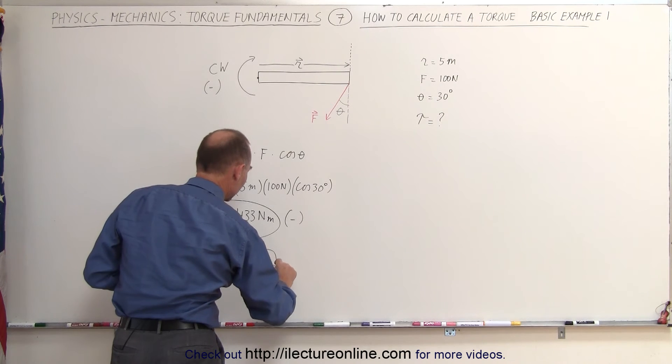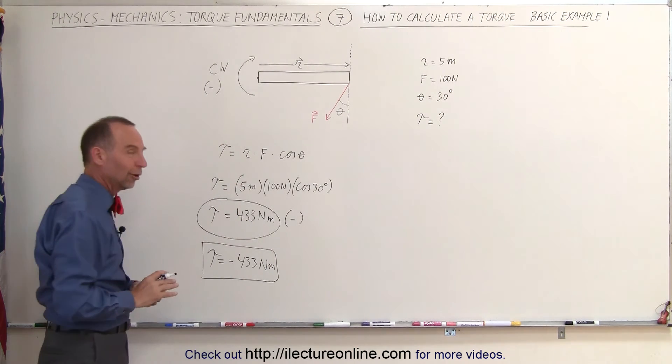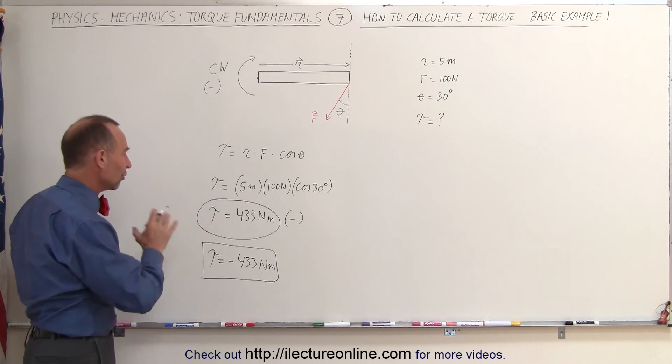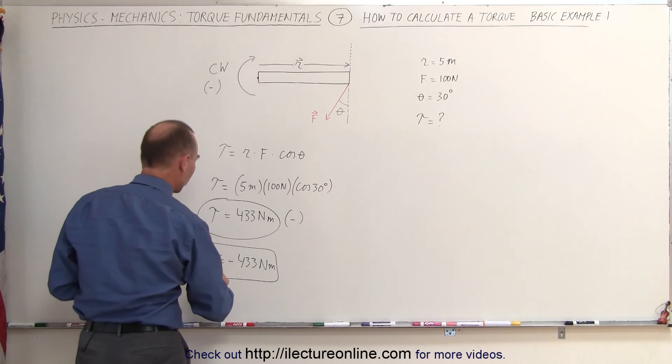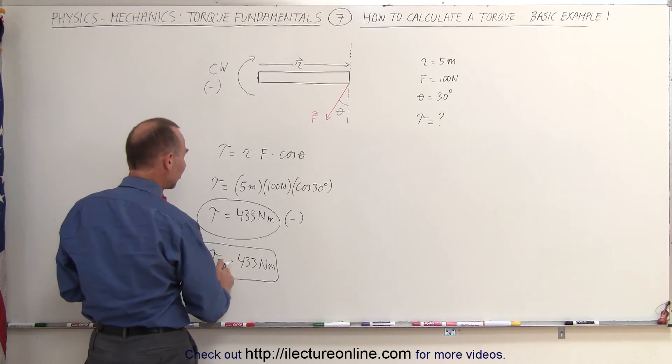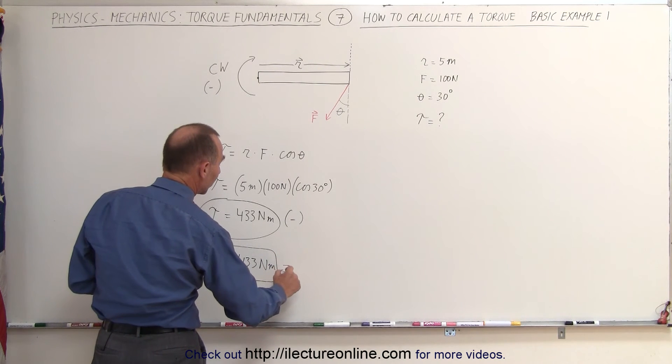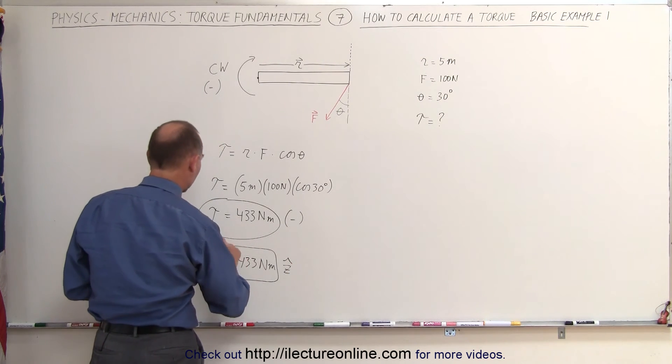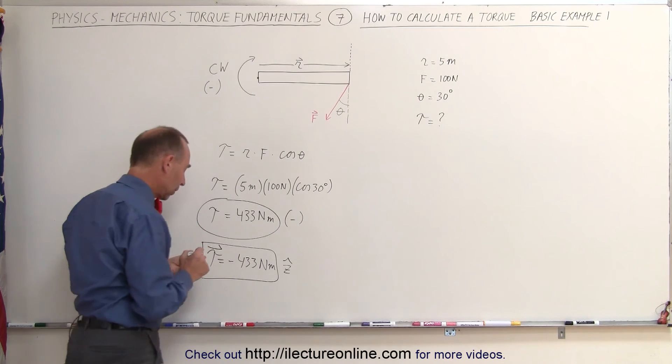It's newton meters, not newtons. Newtons is the unit of force; newton meters is the unit of torque. So torque is minus 433 newton meters. If you're going to write it with a negative sign, you probably want to put it in the z direction and make it into a vector like that.